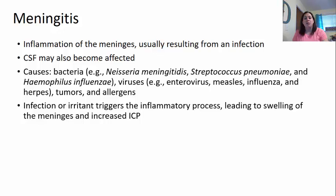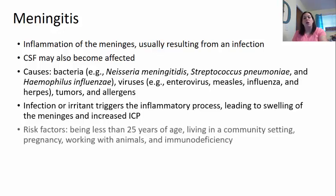This leads to swelling of the meninges. If the meninges swell, remember in your brain case there's only so much room — this can increase intracranial pressure on your brain. Some risk factors include being less than 25 years of age, so if you're younger you're at a higher risk. Living in a community setting, meaning there are people you're around constantly, can actually increase your chances of getting meningitis.